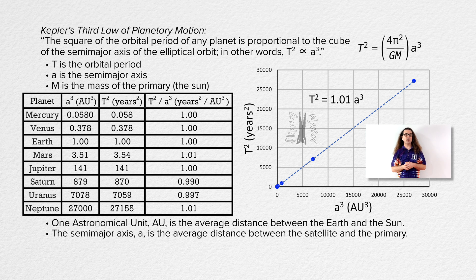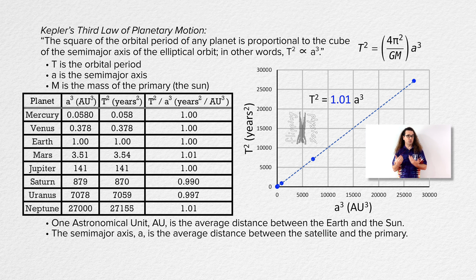We can graph orbital period squared versus semi-major axis cubed. The best-fit line equation works out to be orbital period squared equals 1.01 times semi-major axis cubed. The slope equals roughly one, as we would expect, because we chose units of astronomical units for the semi-major axis and Earth years for orbital period, as Bobby just explained. Next time, we are going to derive Kepler's third law of planetary motion.